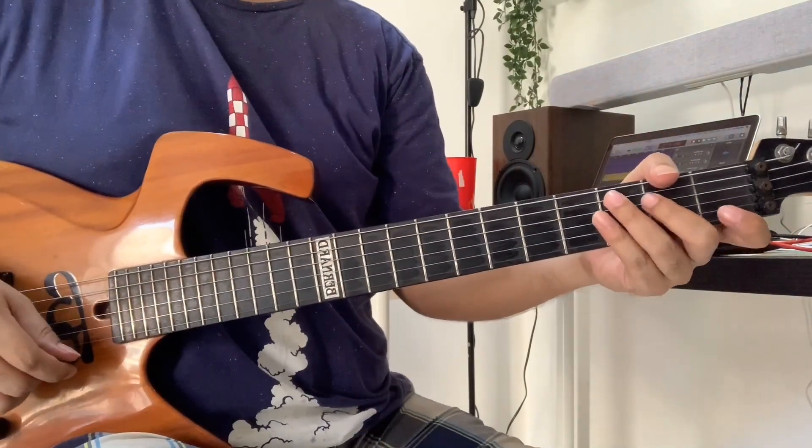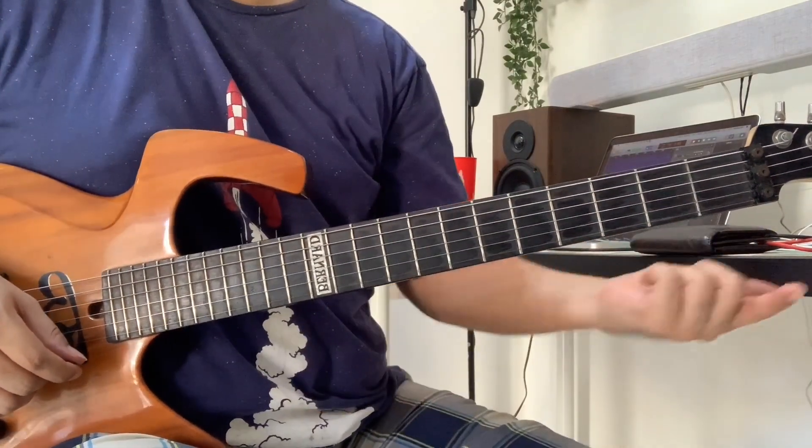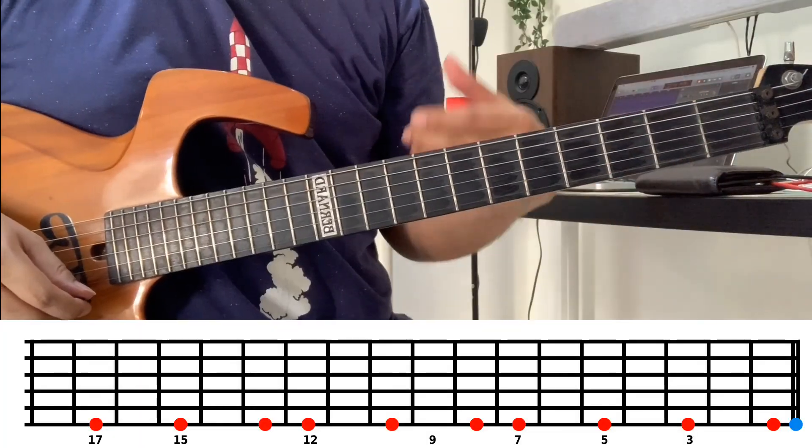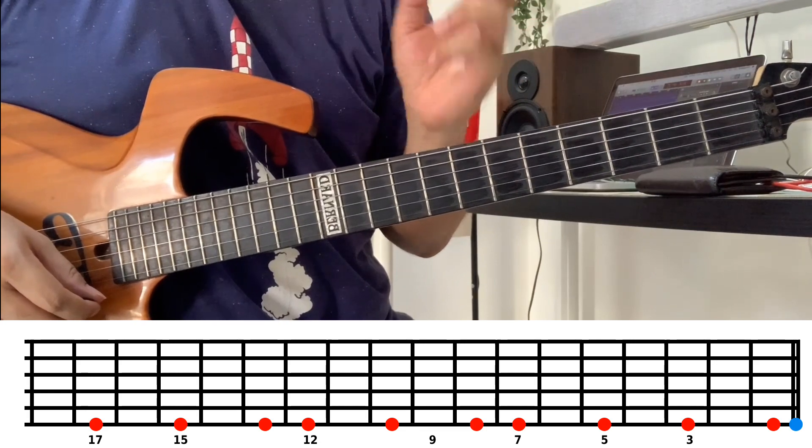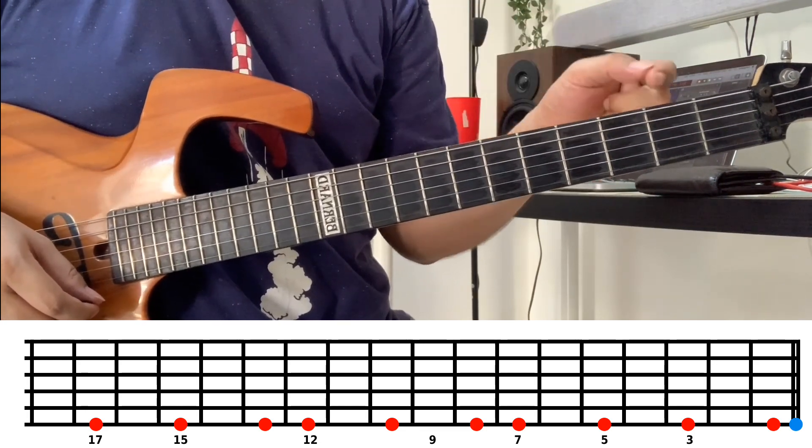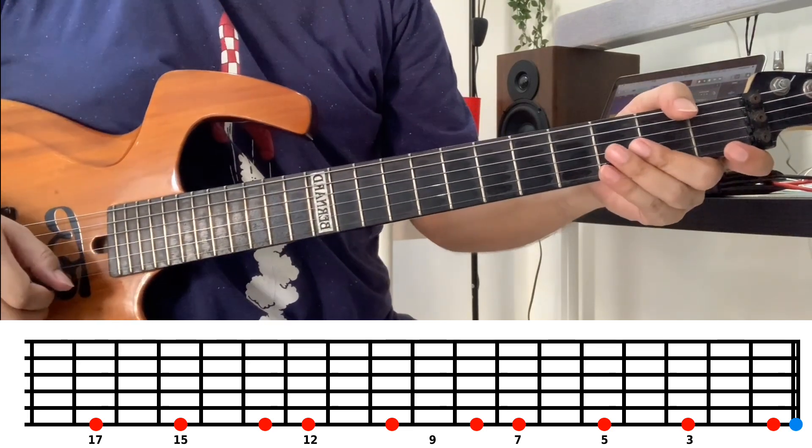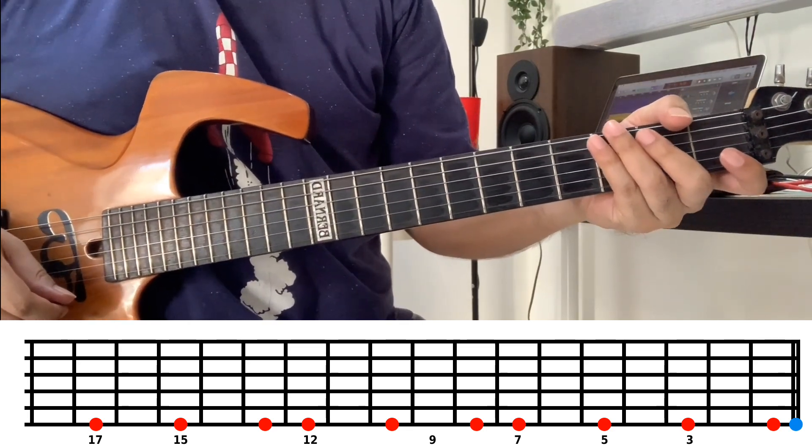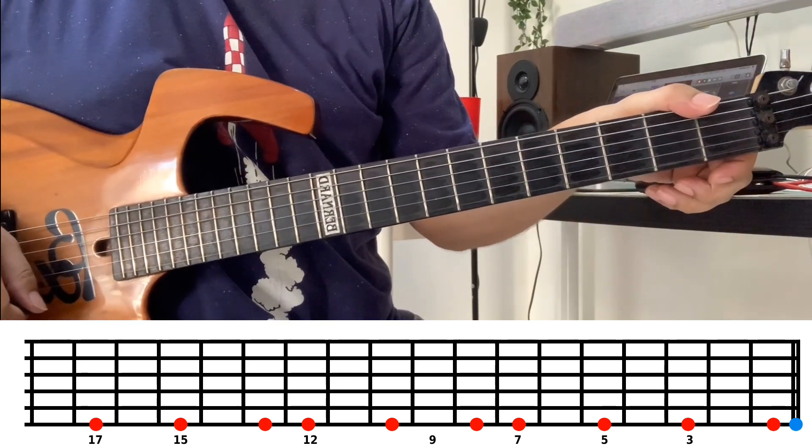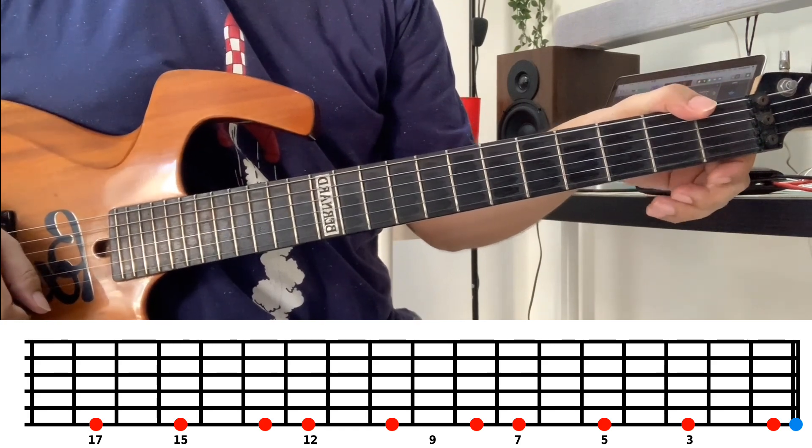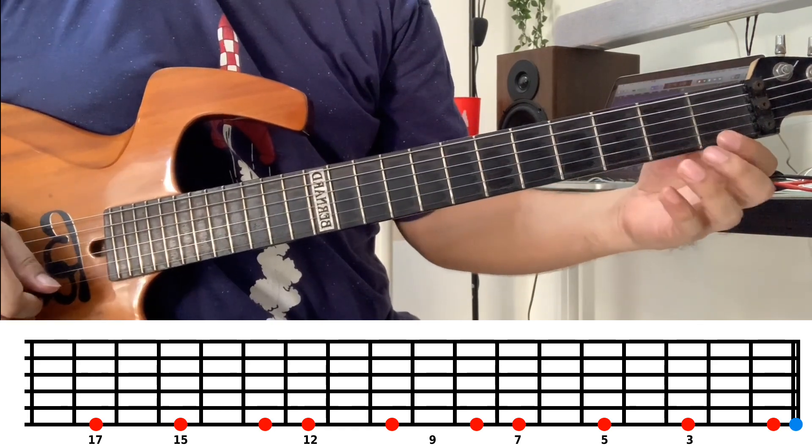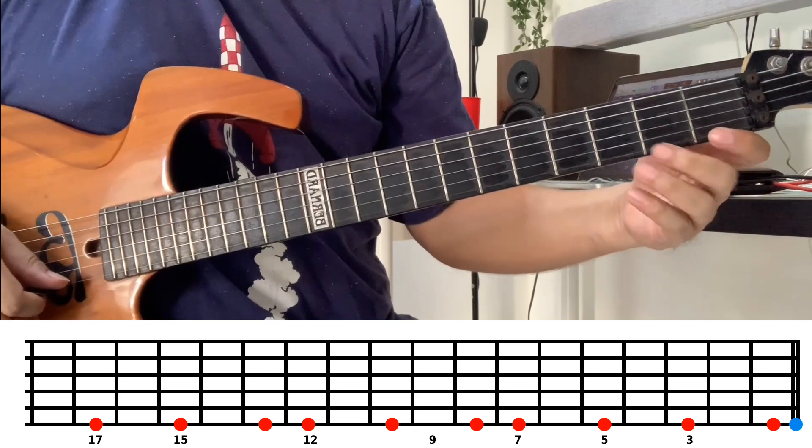We're playing in the key of C, which equals Do. You can see the red markings. Those are the notes in C or Do, or key center C on the first string only. You'll see some blue markings - that's the open string. The open string is note E, and in front of it is a semitone. Fret one is note F.